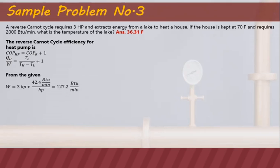From the given, the power requirement is 3 horsepower. Converting to BTU per minute by multiplying by 42.4 gives 127.2 BTU per minute. The house is to be kept at 70 degrees Fahrenheit, which is also the temperature of the hot reservoir, so TH equals 70 plus 459.67, giving 529.67 Rankine. Our QH is 2,000 BTU per minute.